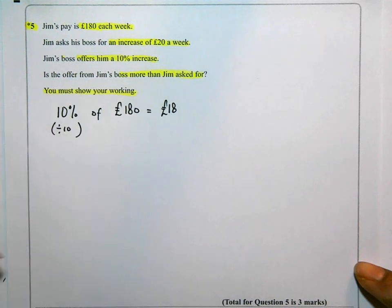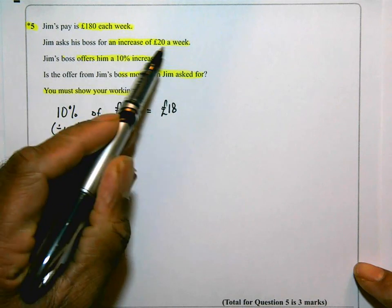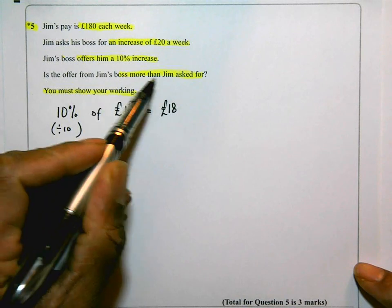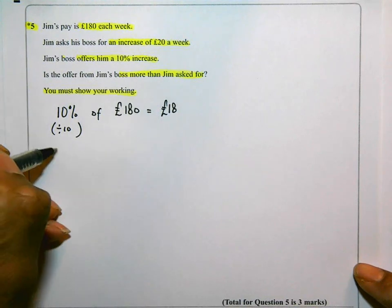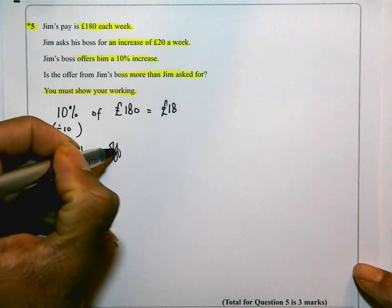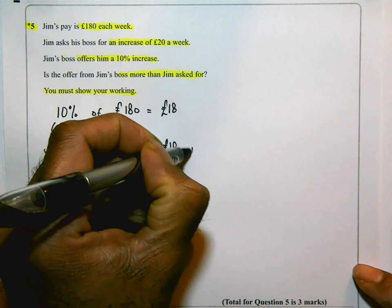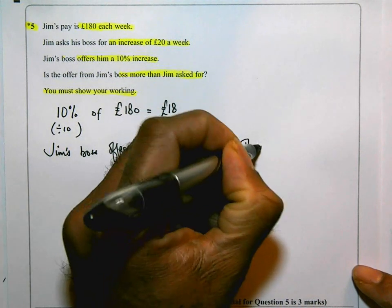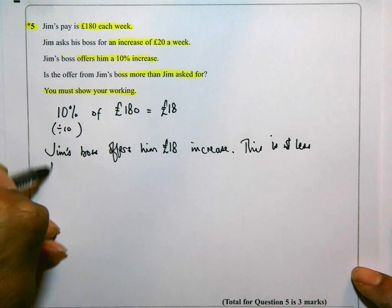The boss is offering him £18 increase. He asks for £20 a week increase in his pay. The question says, is the offer from Jim's boss more than Jim asked for? So I'm going to put here Jim's boss offers him £18 increase. This is less than £20.